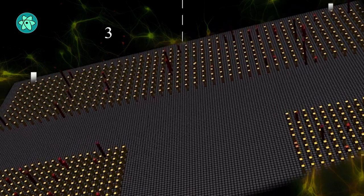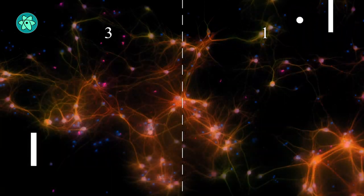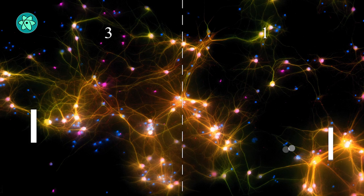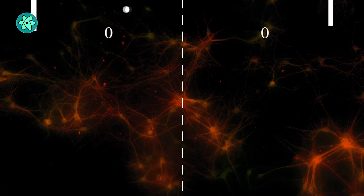One exciting finding was that DishBrain did not behave like silicon-based systems. For example, the neurons' ability to change and adapt their activity as a result of experience increases over time, consistent with what is seen with the cell's learning rate.